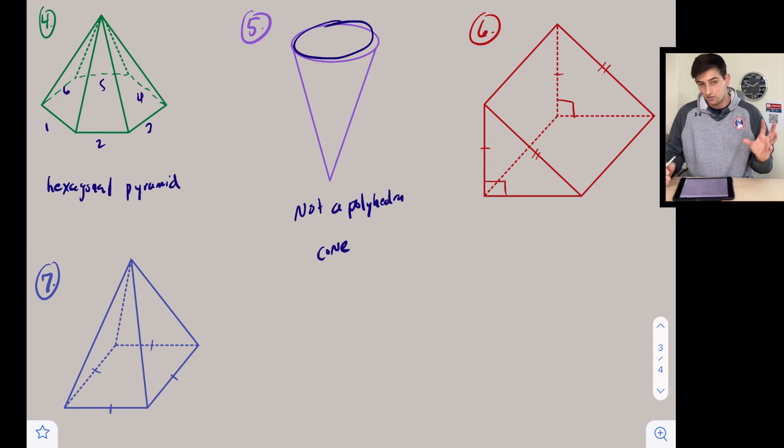Number six: we have a triangle if we think about the left side and then the right side of the shape. So this is going to be triangular, and notice that all the faces don't meet at a point—it's not a pyramid. So this is a triangular prism.